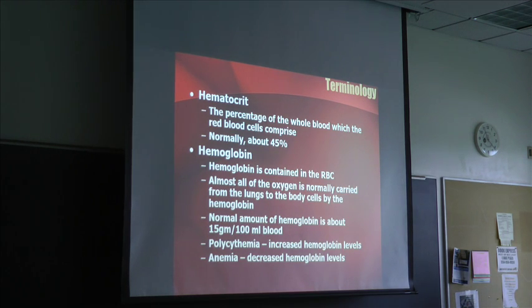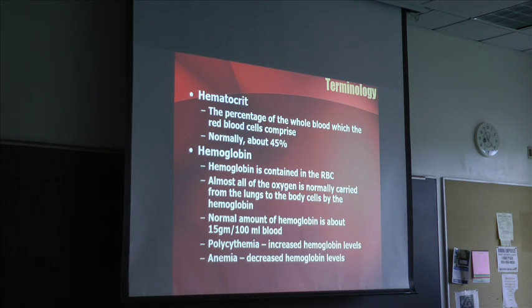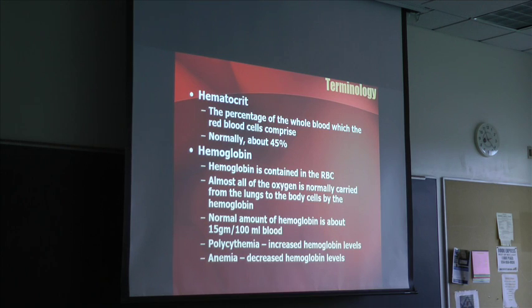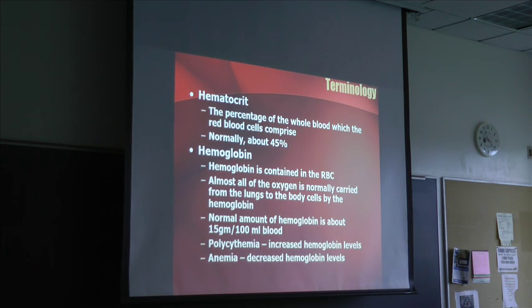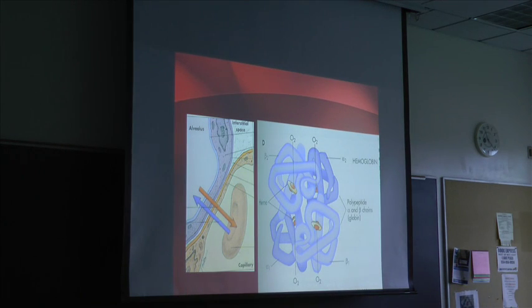Anemia is decreased hemoglobin levels. That could be from poor nutrition — the body needs iron in order to produce red blood cells, so poor nutrition can result in anemia. There are also some genetic illnesses that can result in anemia.